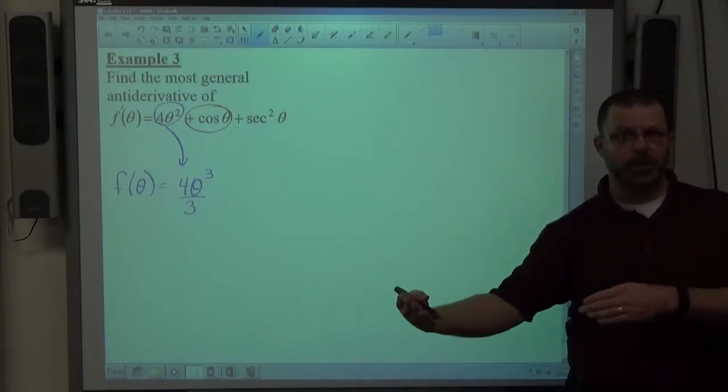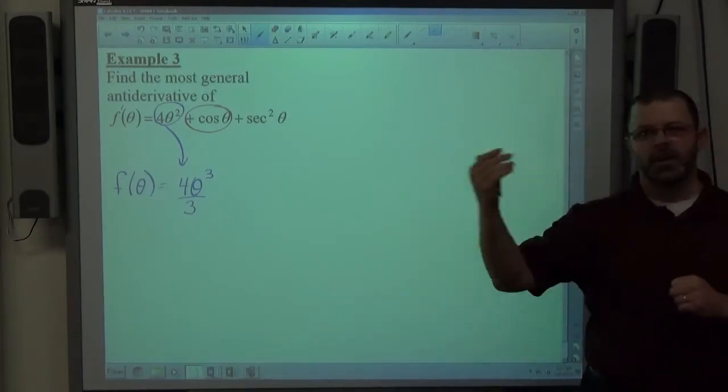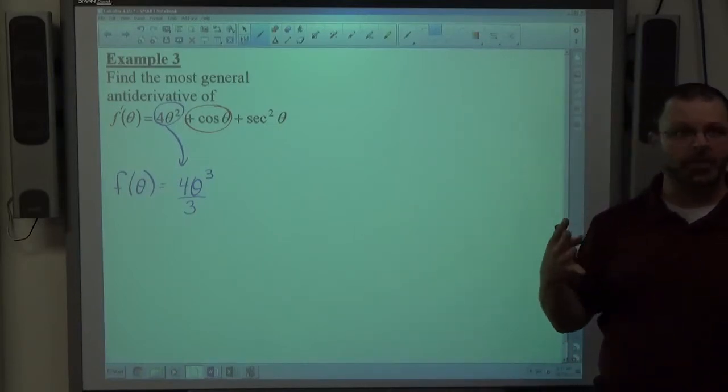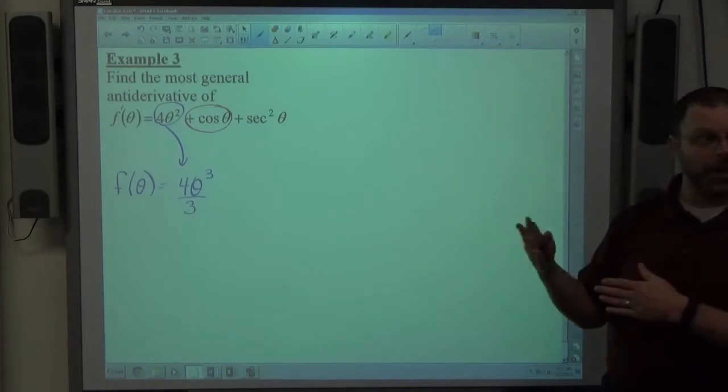Secant squared, cosecant squared go back to tangent, cotangent. Secant tangent, cosecant cotangent go back to secant and cosecant. So those are the six types of structures we know how to anti-differentiate in the trig world.